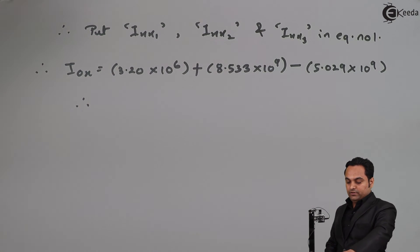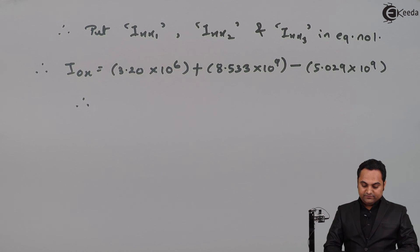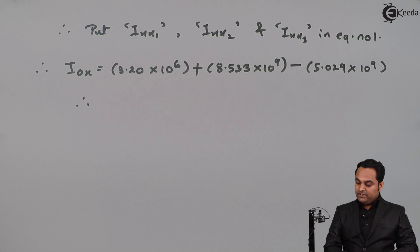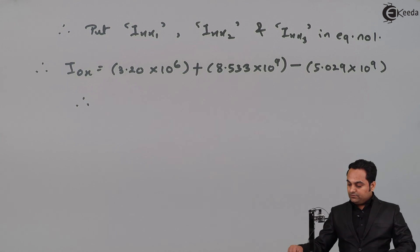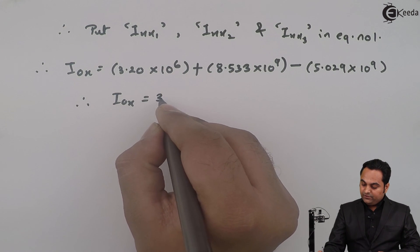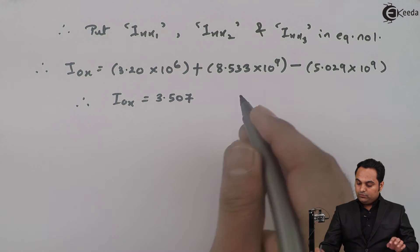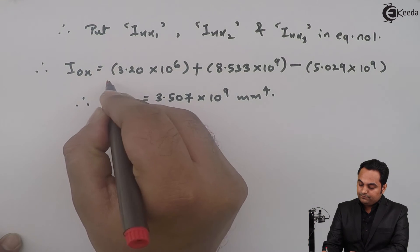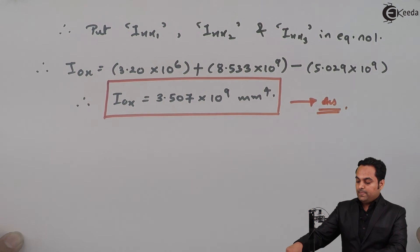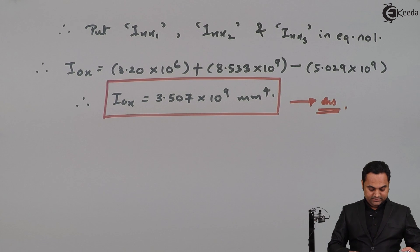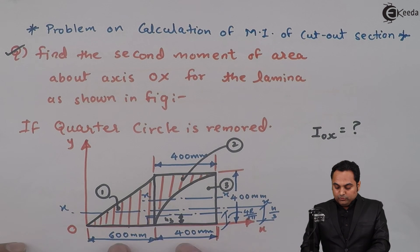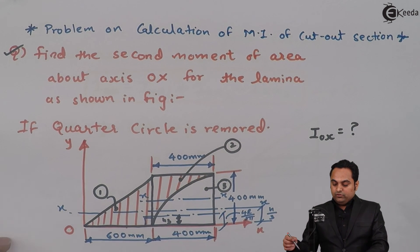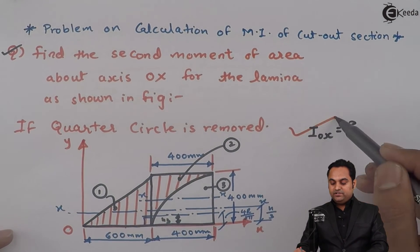Calculating: IOX = 3.20×10⁶ + 8.533×10⁹ − 5.029×10⁹, which comes out to be 3.507 × 10⁹ mm⁴. The question asked us to calculate the MI about the OX axis, and we have found the value as IOX = 3.507 × 10⁹ mm⁴. With this, we complete the question.